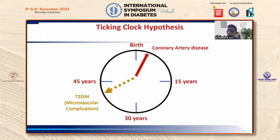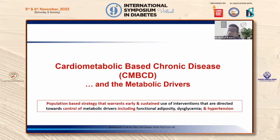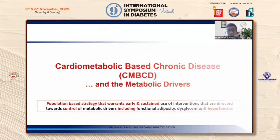The macrovascular clock of heart disease starts ticking very early in life — atherosclerotic plaques begin at age six or seven. By the time diabetes becomes overt, macrovascular complications have already settled, and by the time microvascular disease begins, overt diabetes is already present. The metabolic driver of cardiometabolic-based chronic disease requires early intervention strategies to control adiposity, dysglycemia, and hypertension — A for adiposity, B for blood pressure, and C for dysglycemia.